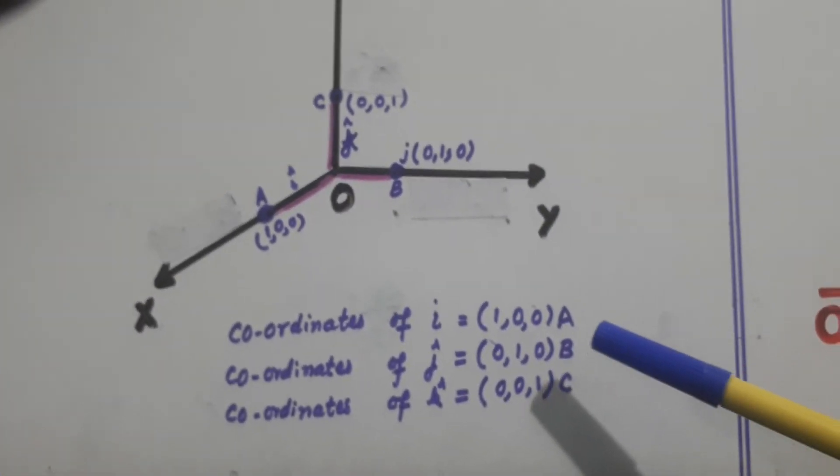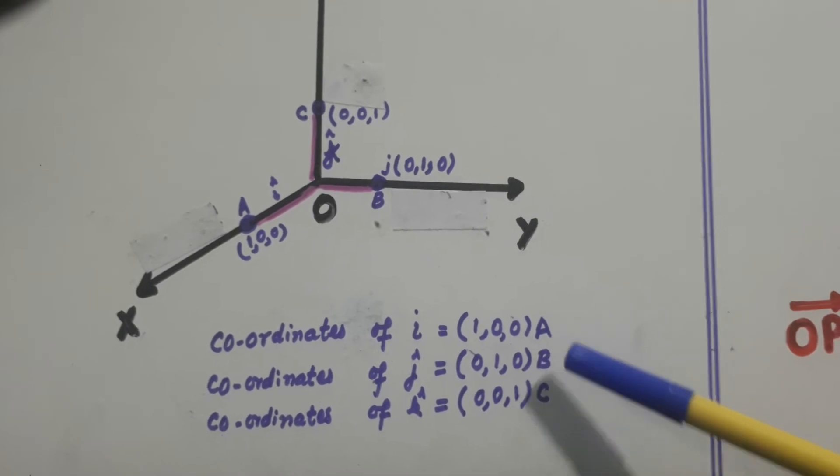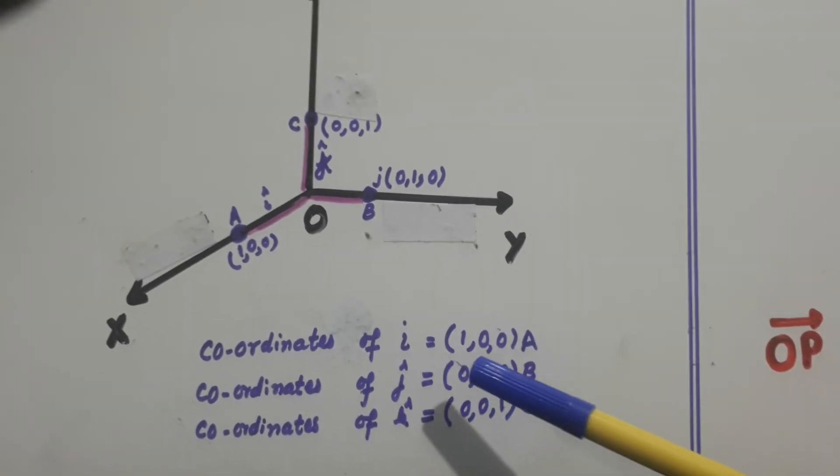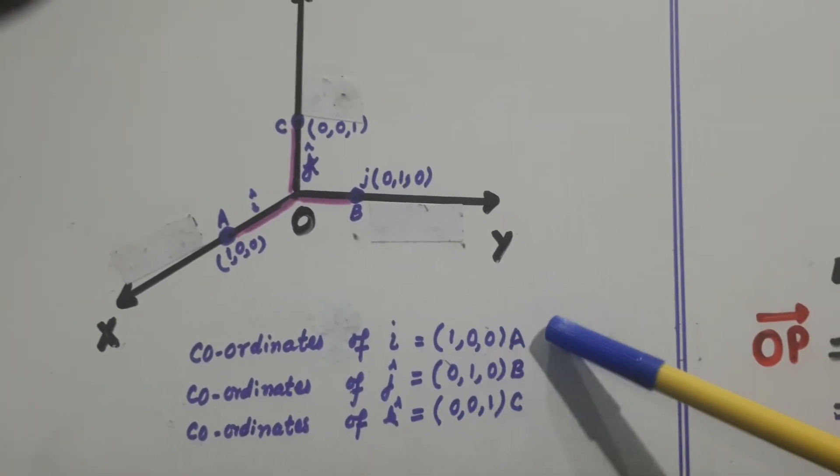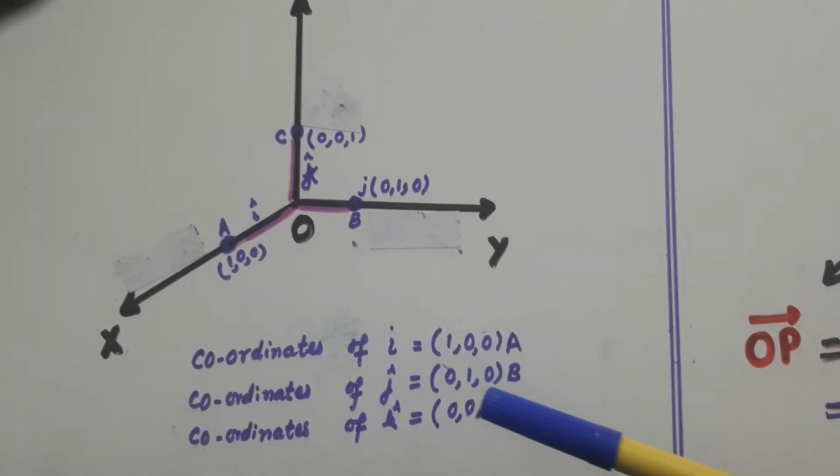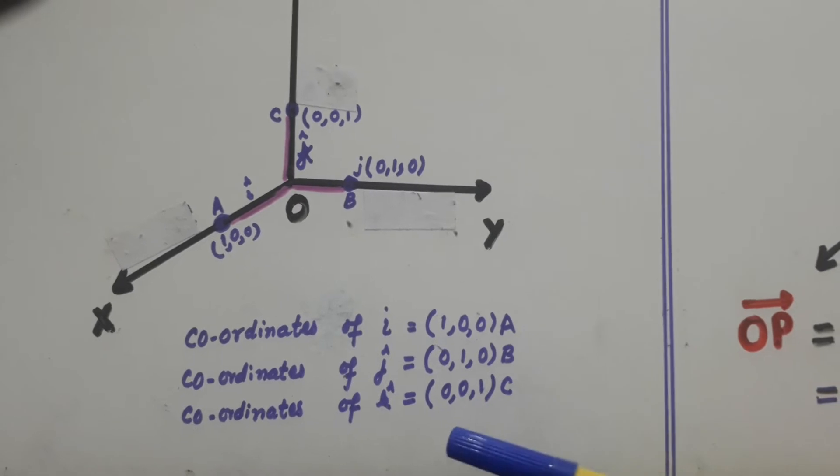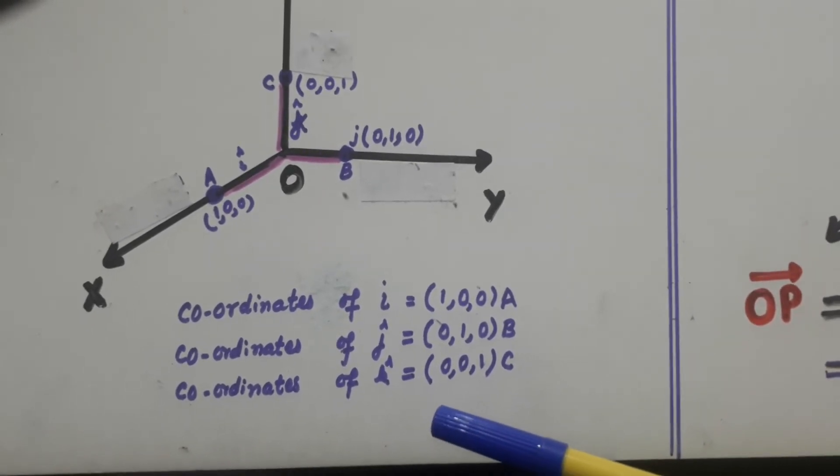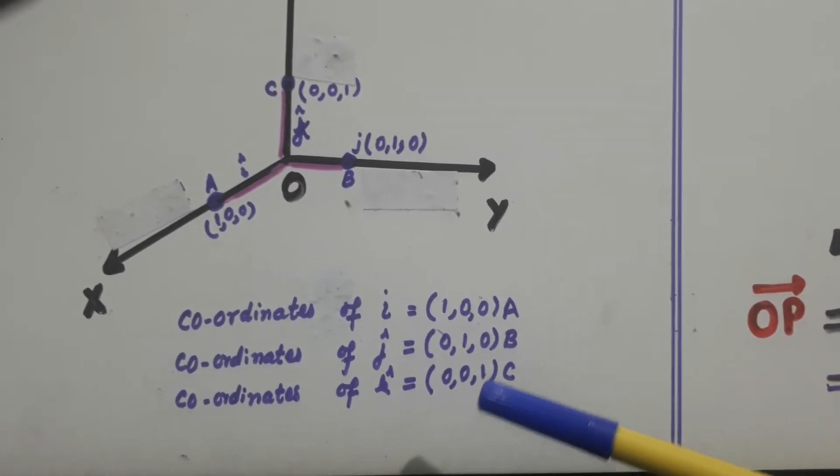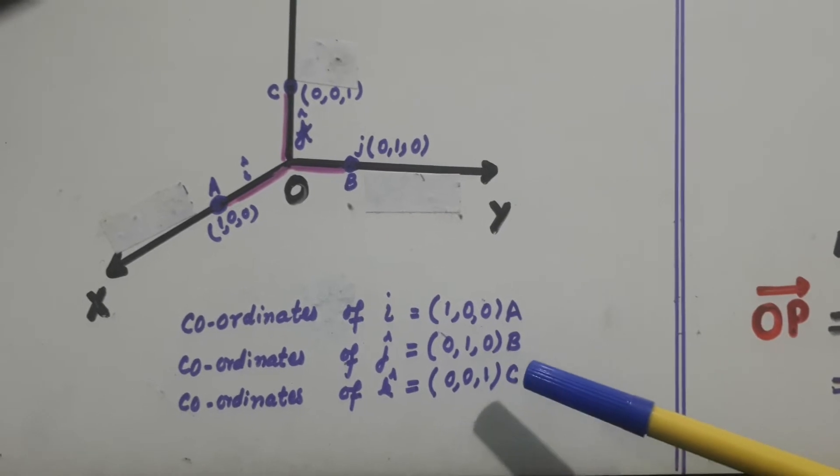So this is what I have written here. Coordinates of i: 1, 0, 0, that is point A. Coordinates of j: 0, 1, 0, this is point B. Coordinates of k: 0, 0, 1, this is point C.